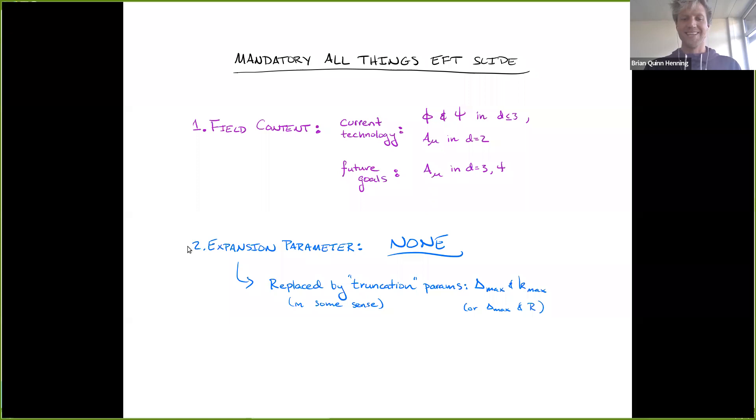So in terms of an expansion parameter, well, the whole point of this is that there really is none. We're able to do things at strong coupling. That's a little bit tongue in cheek, but there are, of course, parameters in this theory. They get replaced by truncation parameters, which for us is essentially things which control the size of your basis. And these will set UV and IR scales. One easy way to think about truncation is in finite volume, compactifying space. So this is like what the lattice does, of course, right?